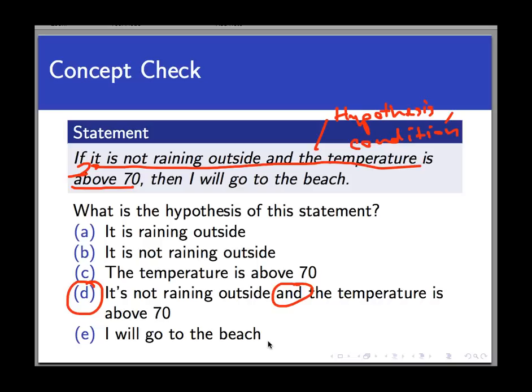If only one part is met and the other isn't—for example, if it's not raining outside but the temperature is not above 70—then there's no guarantee that we'll go to the beach. I might and I might not. Maybe I'll decide to go anyway and just look at the sunset, even though it's 30 degrees outside.